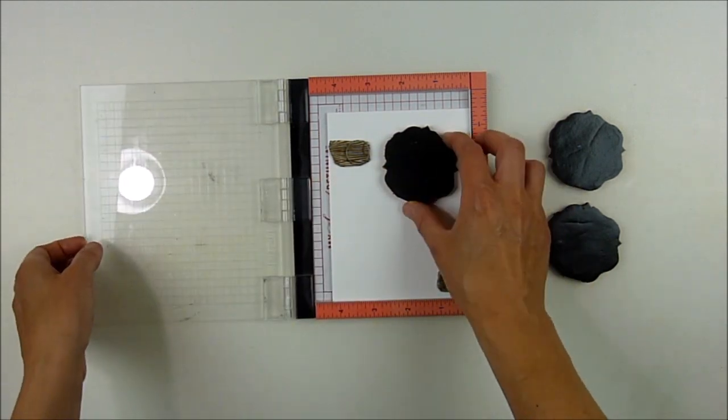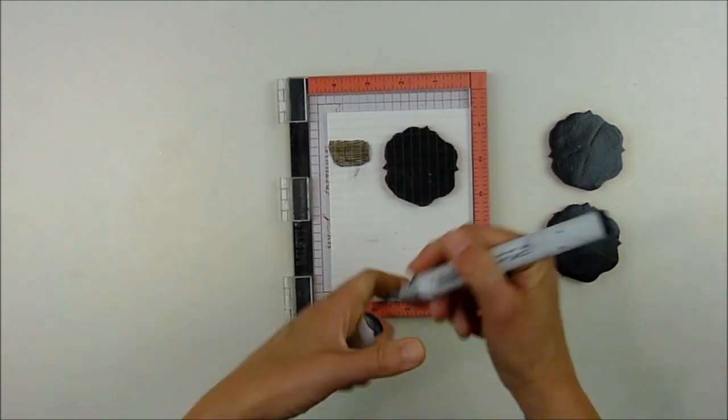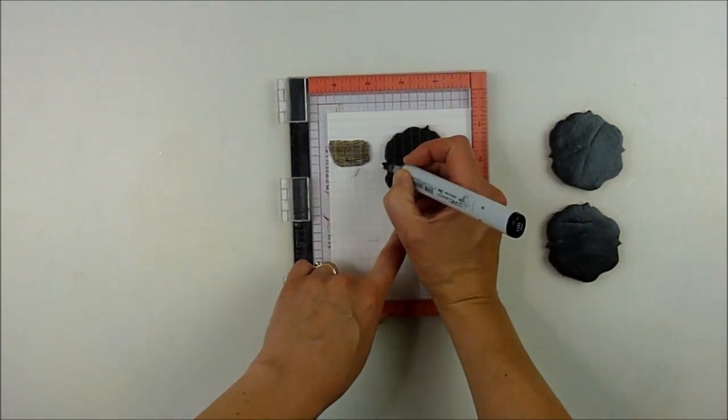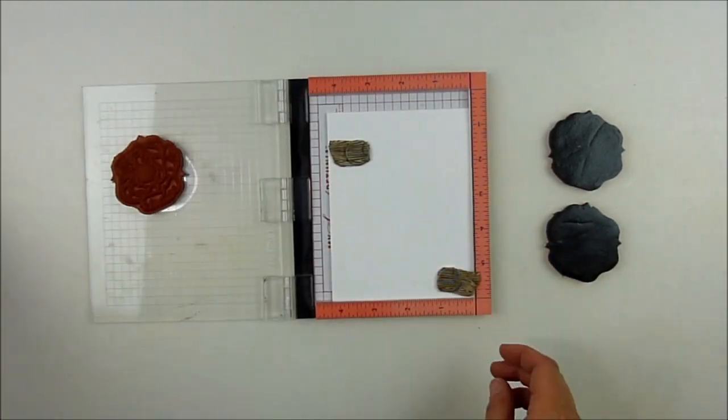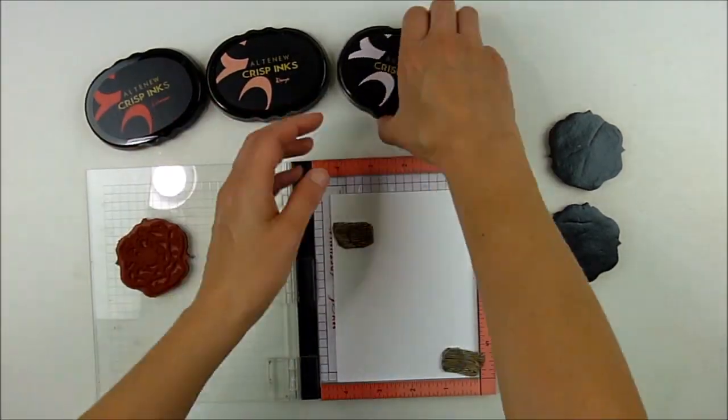Since they're red rubber instead of clear, it takes a little more finesse just to get them lined up the right way and I'm using my MISTI. You'll notice on the stamp set there's some little notches and I'm using a black Copic marker.